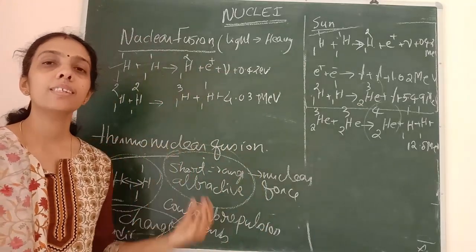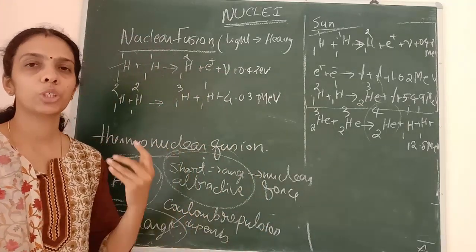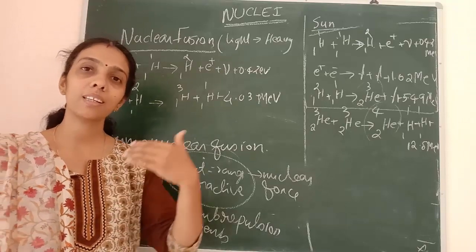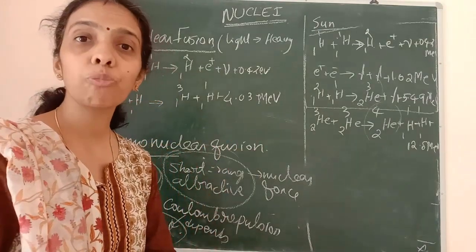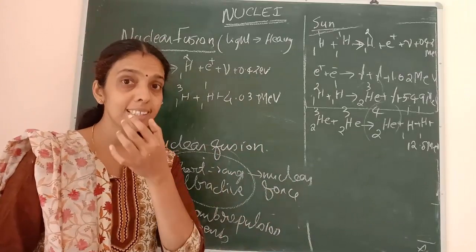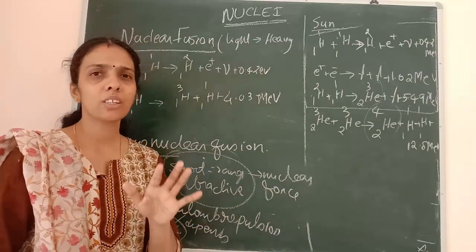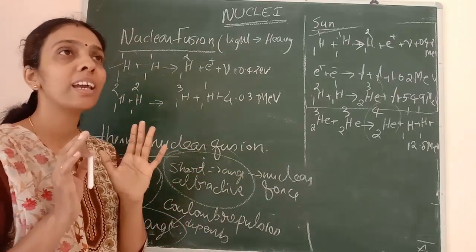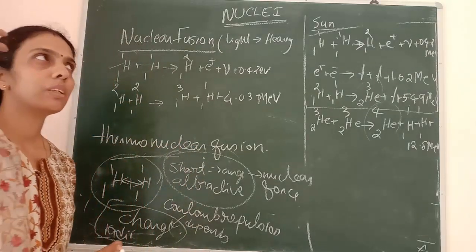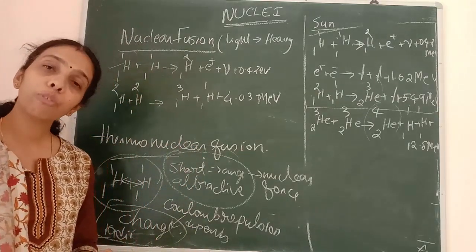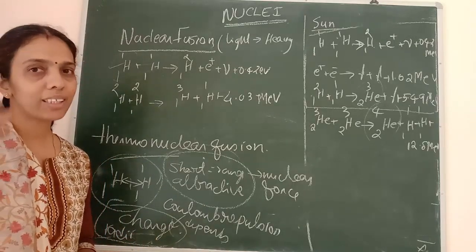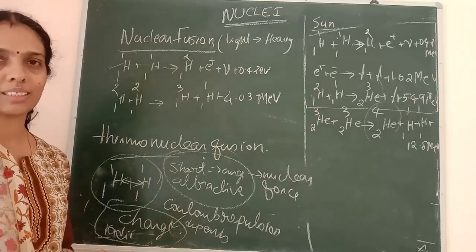That is why nuclear fusion usually happens in the plasma state — the fourth state of matter — where that much heat energy is present. We know that it is because of nuclear fusion that we receive sunlight and energy from the sun.